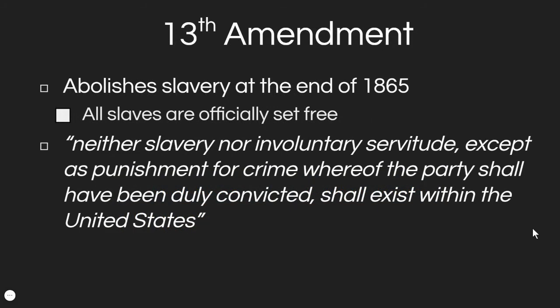The 13th Amendment gets passed in Congress in 1865 and ratified in the northern states. When the war ends, the 13th Amendment is the law of the Union — it says that slavery is abolished. Neither slavery nor involuntary servitude, except as punishment for crime whereof the party shall have been duly convicted, shall exist within the United States. That language is going to be very important when we look at certain laws put in place to basically bring about slavery, part two.